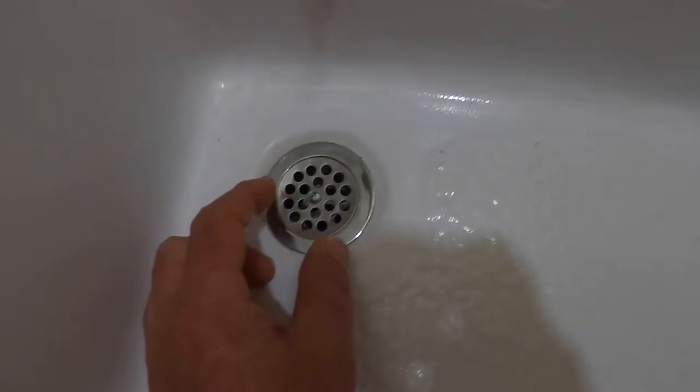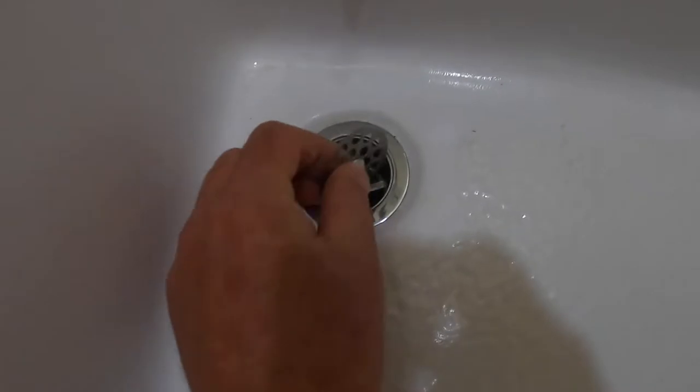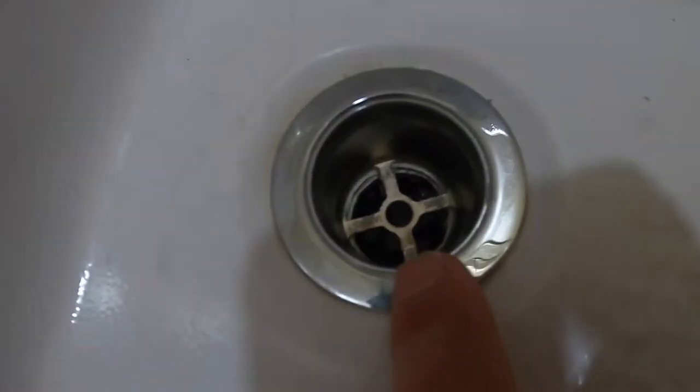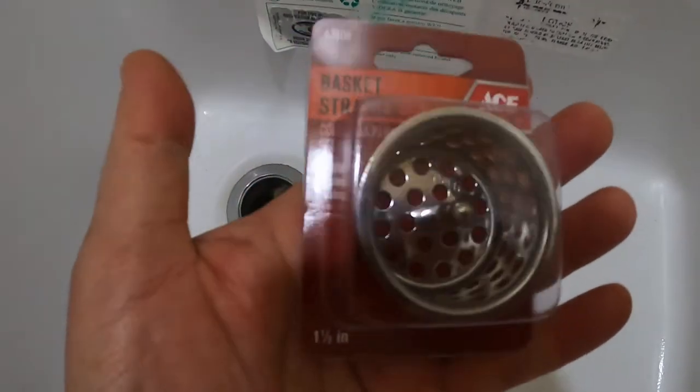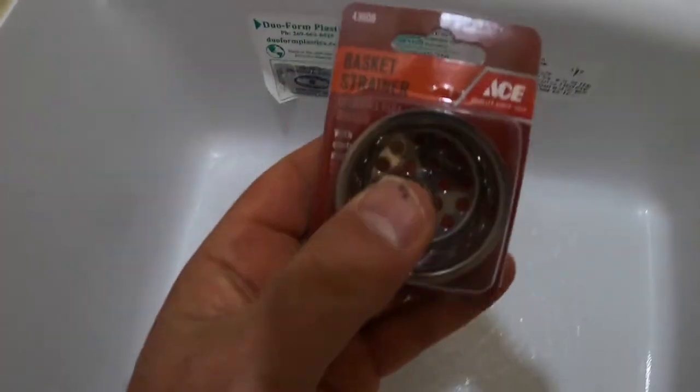So what I'm going to recommend that you do is take that screw out and remove this strainer. It just sits down in this little groove, and here's something you're going to find at ACE. This is an inch and a half basket strainer.